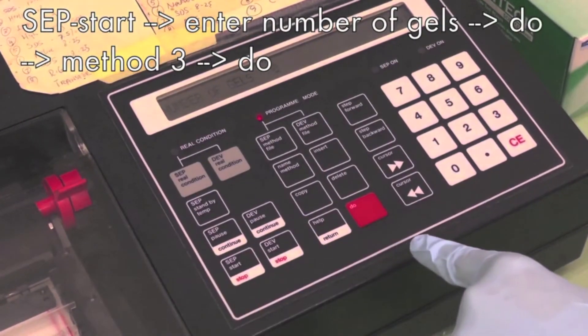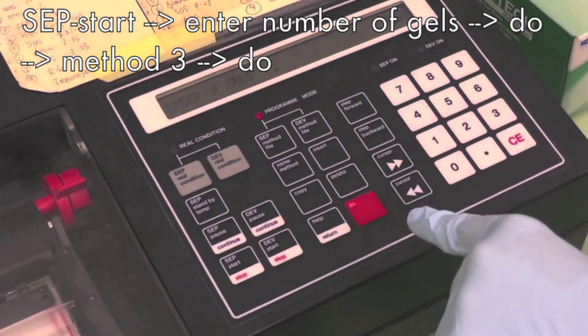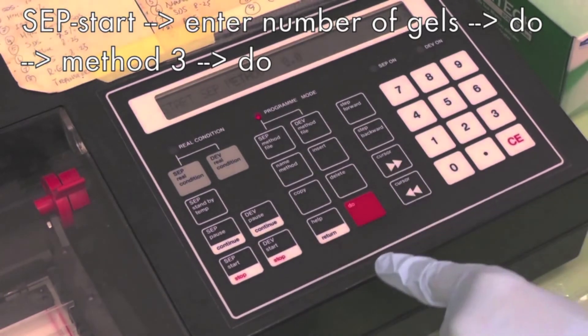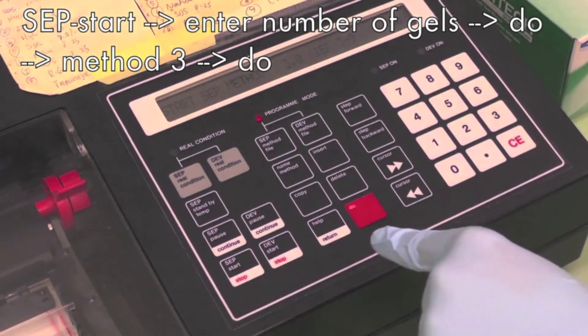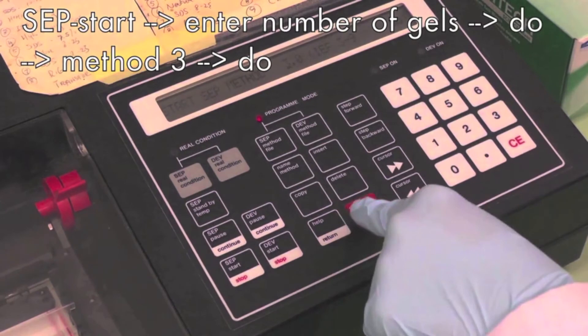Press sep star 1 or 2 representing 1 or 2 gels and then do. Then press 3 representing IEF 3-9 then do to start the run.